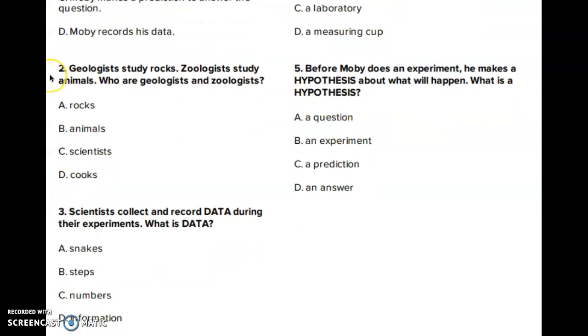Number 2. Geologists study rocks. Zoologists study animals. Who are geologists and zoologists? A. Rocks. B. Animals. C. Scientists. D. Cooks.